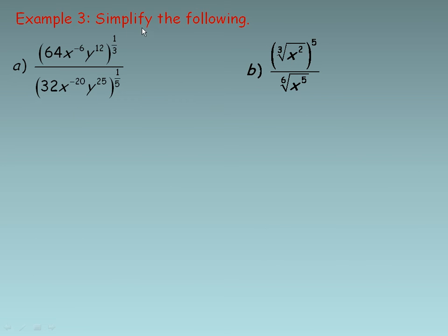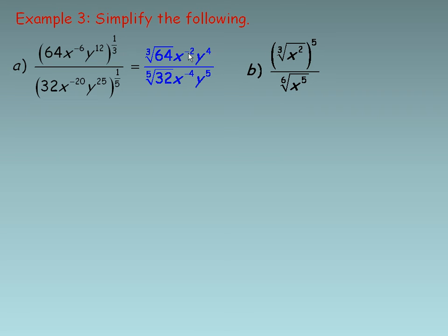On the second page, example 3, you are asked to simplify the following expressions, which have rational exponents — remember those mean roots. A power of one third means the cube root; a power of one fifth means the fifth root. In the numerator, 64 to the power of one third is the cube root of 64. For x to the negative 6 to the power of one third, multiply the exponents: negative 6 times one third is negative 2. And 12 times one third is 4. In the denominator, 32 to the one fifth is the fifth root of 32. Negative 20 times one fifth is negative 4, and 25 times one fifth is 5.